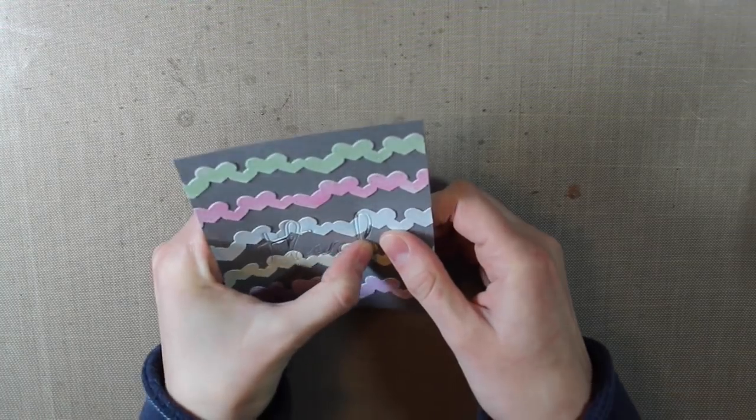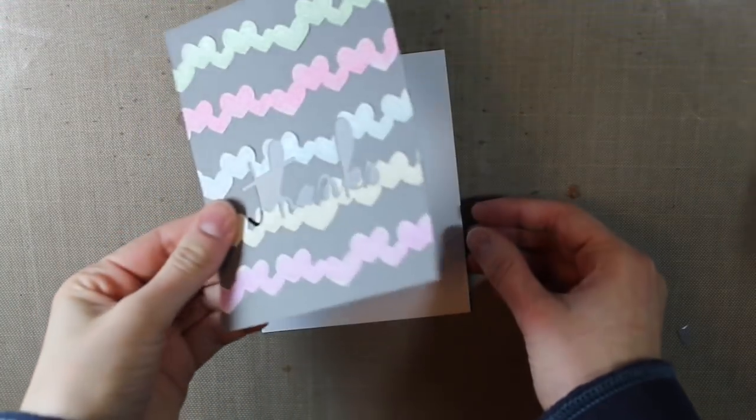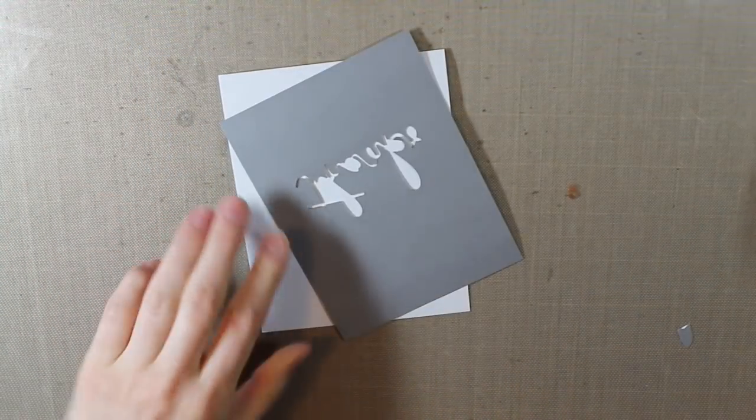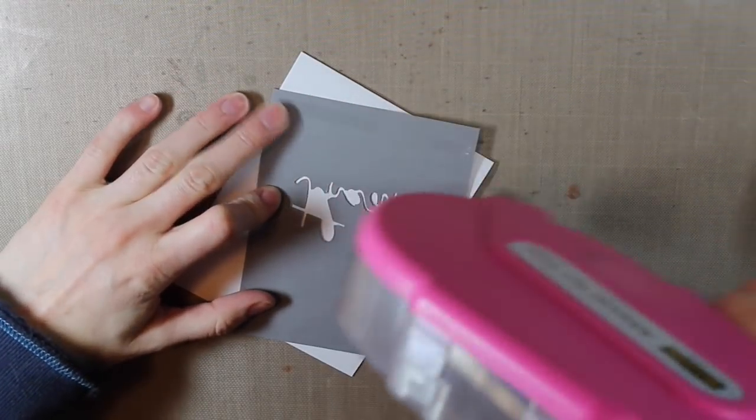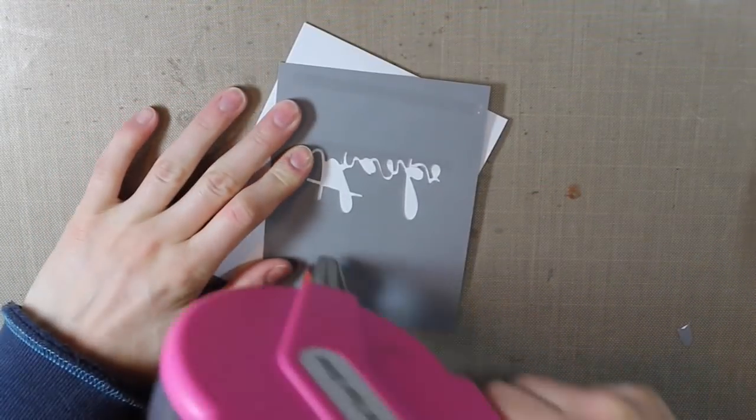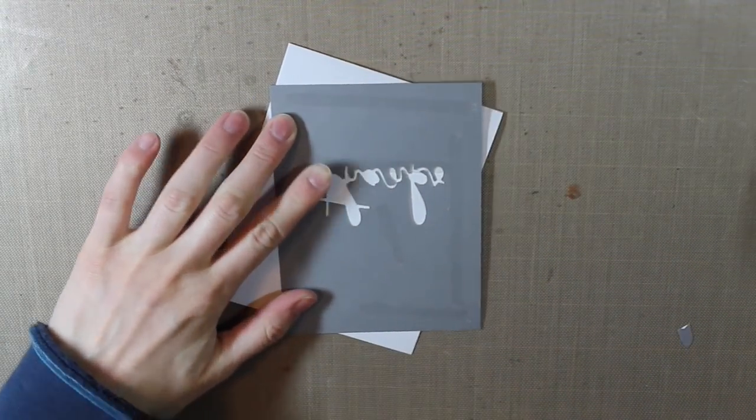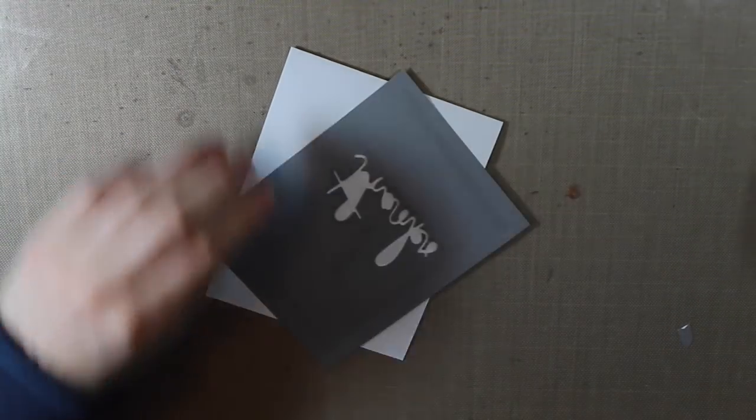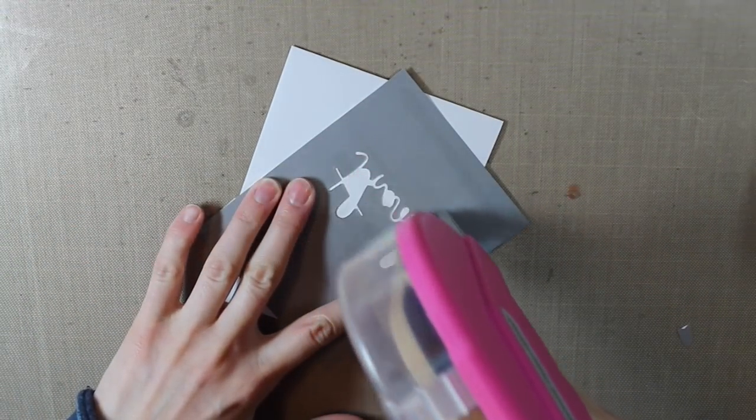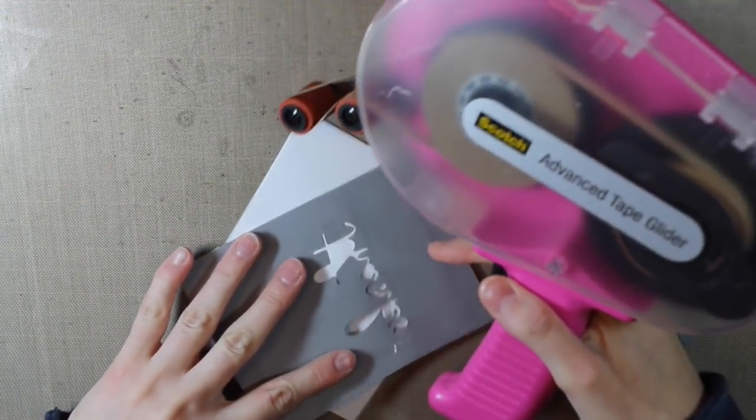Once I got that out of that cardstock, I'm going to adhere down the entire gray background onto my white A2 size card base. I want to make sure I get enough adhesive on all of those little pieces. I just went over that Thanks part because I'm going to be adhering my Thanks die back into there.